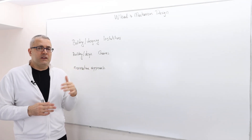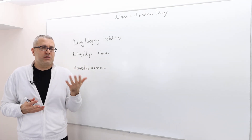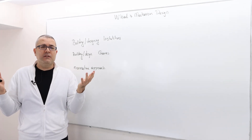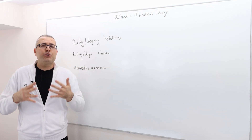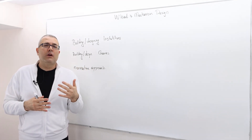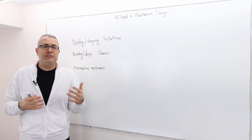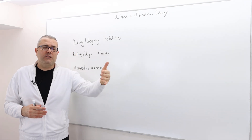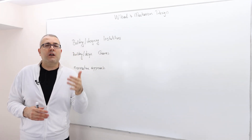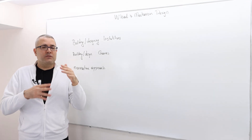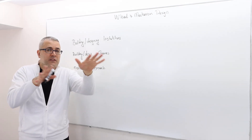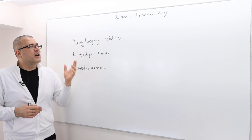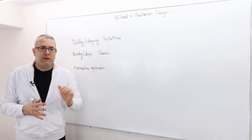In that sense, mechanism design is a normative approach — we don't just look at existing institutions. We ask: think of any institution, how should a good institution work, and what should be its properties? In the sense that there are objectives we'd like to achieve — what kind of institutions will give us those objectives?